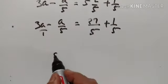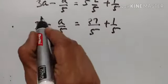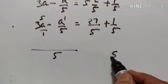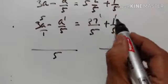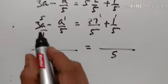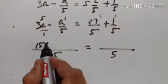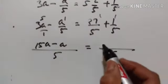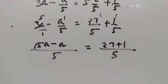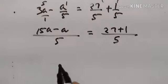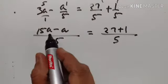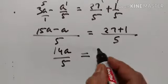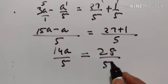Let us take the LCM now. The LCM of 5 and 5 is 5. So 5 into 3A gives 15A, minus A is equal to 27 plus 1. Therefore, 15A minus A equals 14A upon 5 is equal to 28 upon 5.